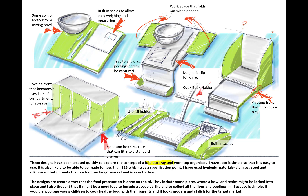I've got a fold-out tray and worktop organizer. I've talked about the price, which was one of my specification points, hygienic materials like stainless steel and silicon which are common kitchen materials, and it's easy to clean and hygienic, suiting my target market. I'm explaining it's a tray that the food prep is done on top of, with places where a bowl or scales might be locked. I've also talked about a scoop which collects things at the end - I think that's quite a nice little design feature. I'm keeping it simple to encourage people to use it, and coming back to my target market of being modern and stylish.